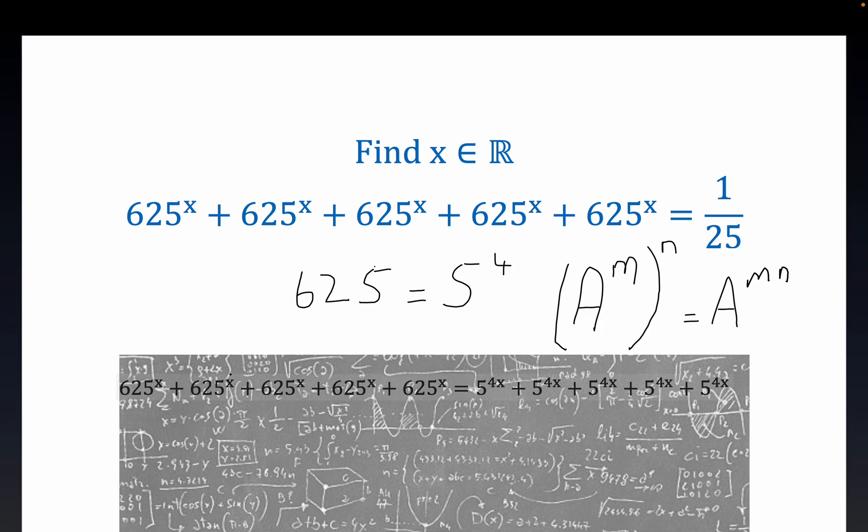And that's precisely what we did right here. We replaced 625 with 5 to the fourth and applied this property to get this statement right here. So we have five summands, but now we have it written as 5 to the 4x summed five times.